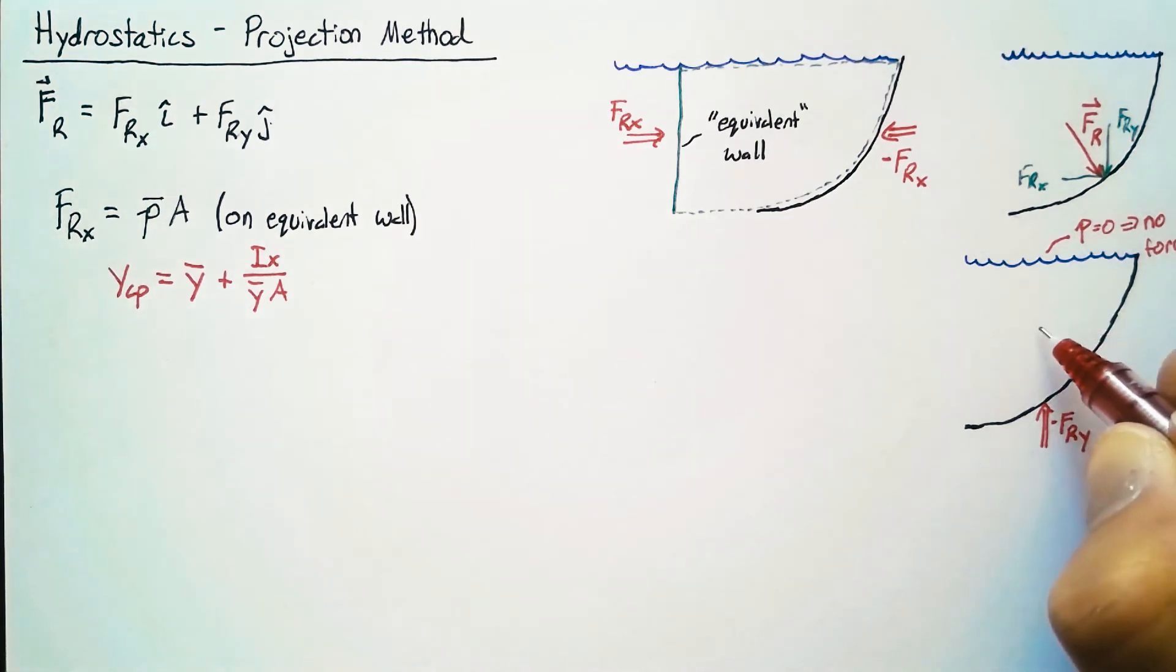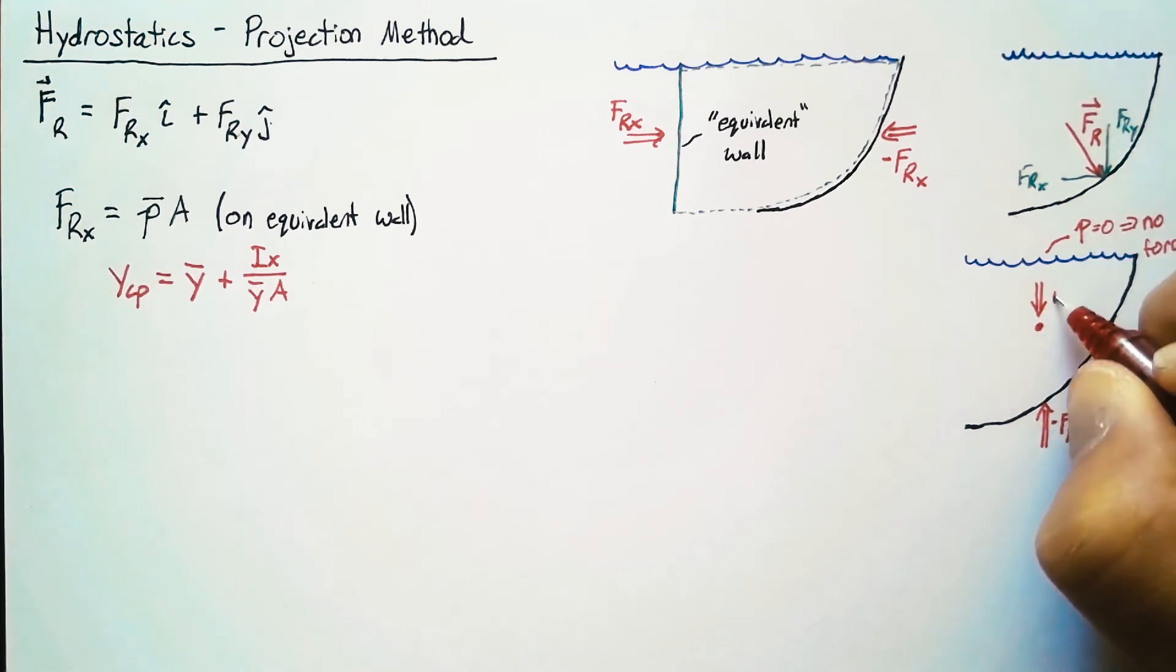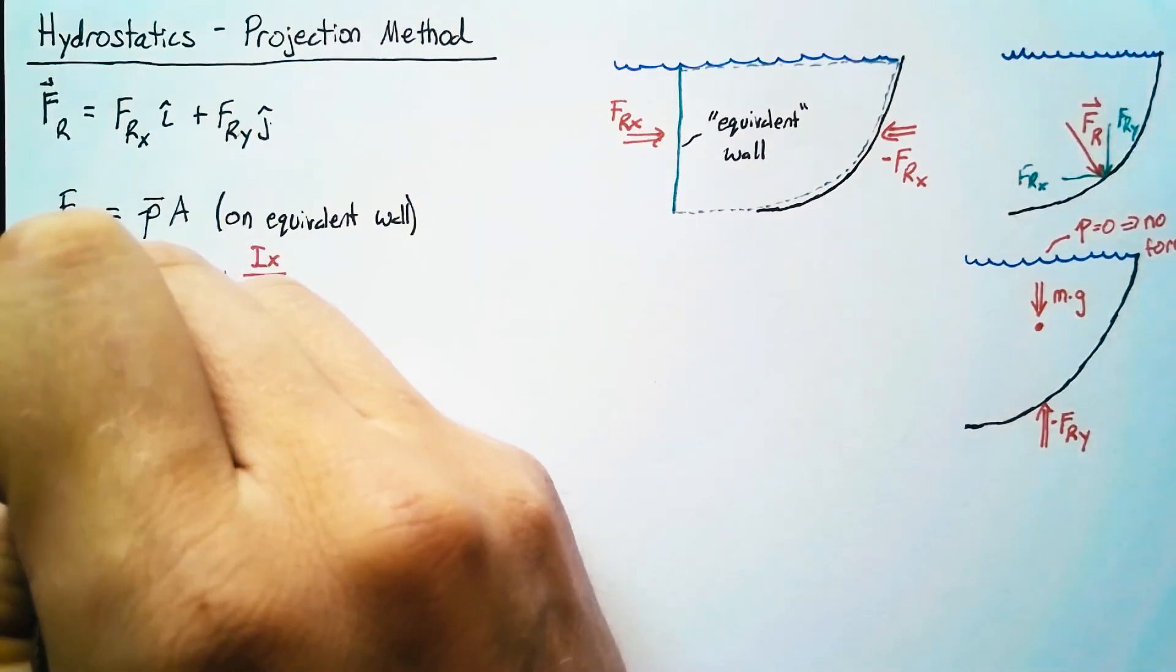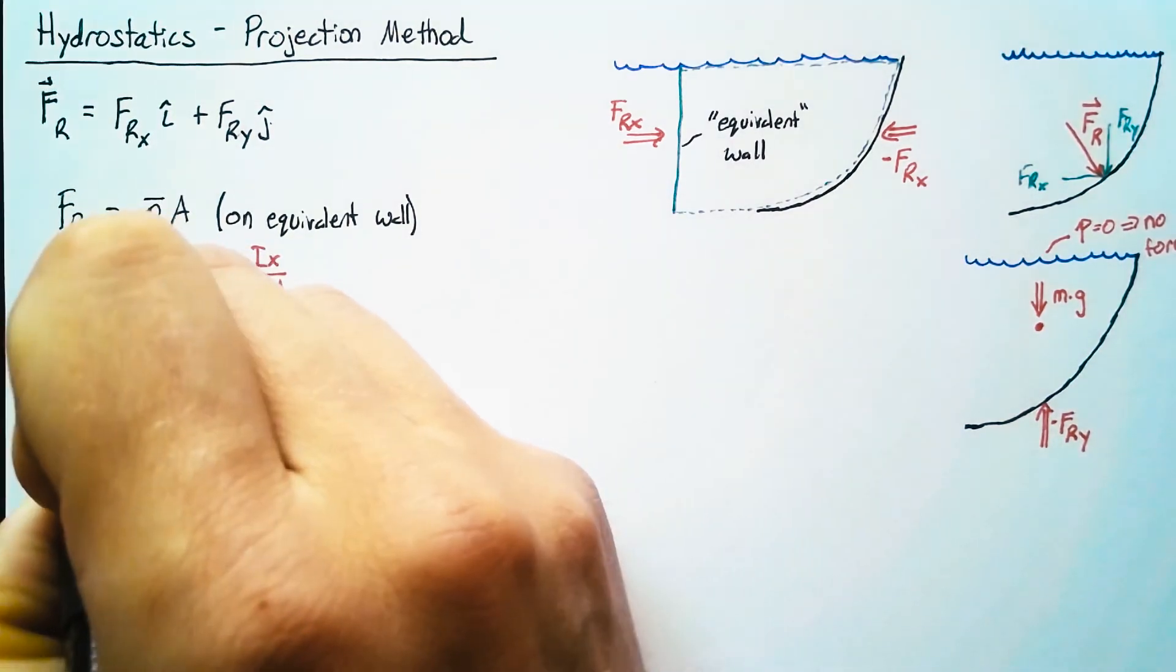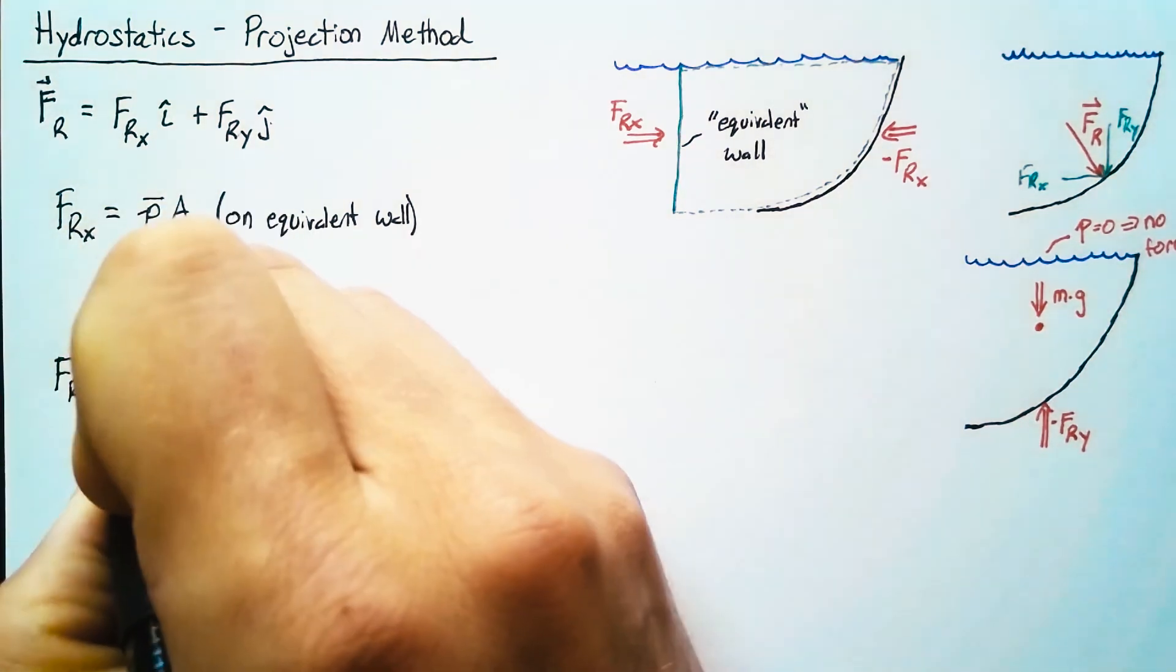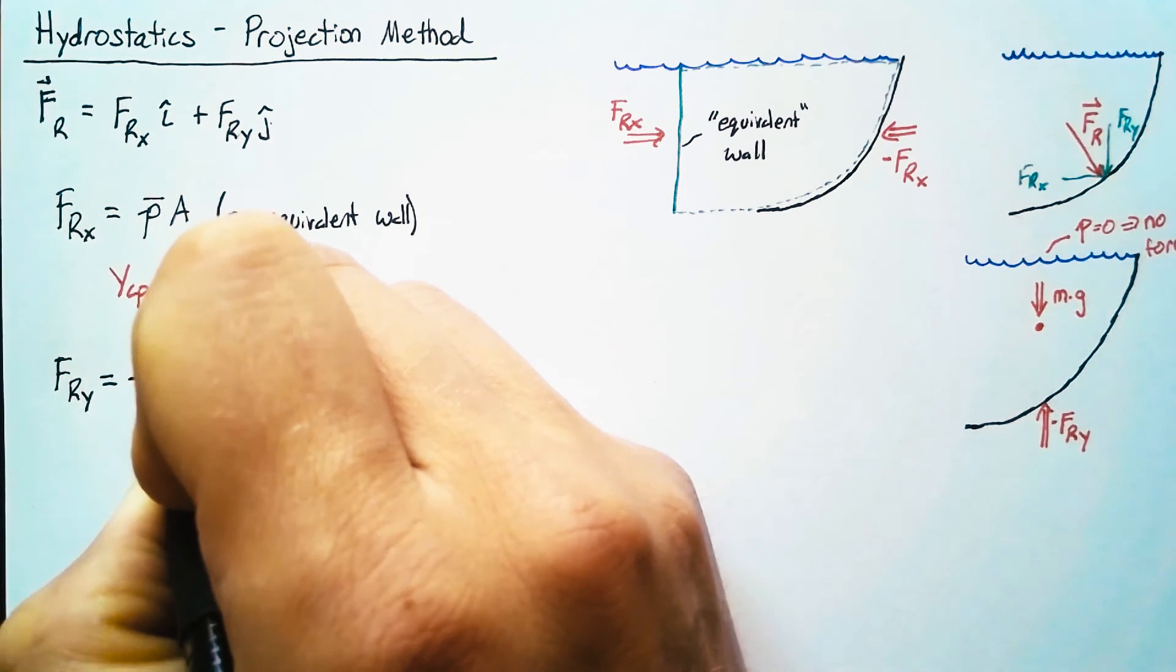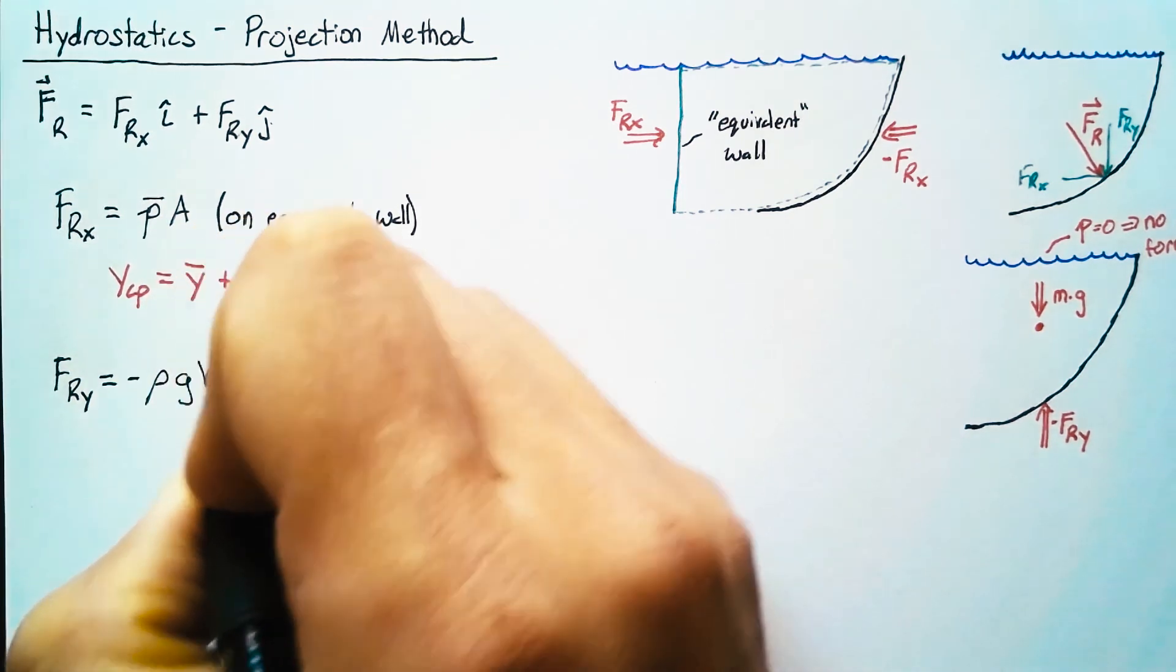But now the force that we get is due to the mass of the water and gravity. So if we want the y component of this force, it's going to be just negative mg or negative rho times g times the volume, where that rho times the volume becomes the mass.